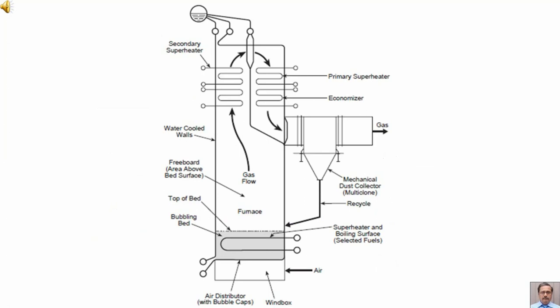Here we are having the schematic diagram for the bubbling fluidized bed boiler. In this diagram, we can see that air is entering in the wind box. And in the wind box, we are having air distributor. This air distributor is having bubble caps just below the bubbling bed. Then we are having the top of the bed. In the bubbling bed, we may be having superheater and boiling surface. But existence of this surface depends upon the type of fuel selected.